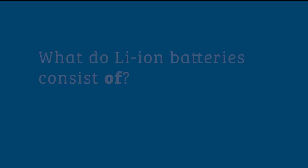Lithium-ion batteries are a type of rechargeable battery with the ability to store electrochemical energy. These are commonly found in laptops and mobile phones, but are more recently being used in electric vehicles. So, what do these batteries consist of?